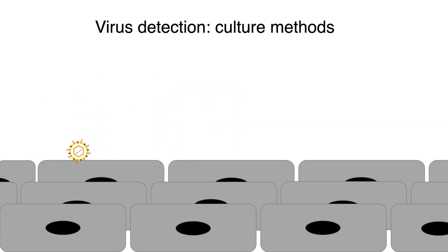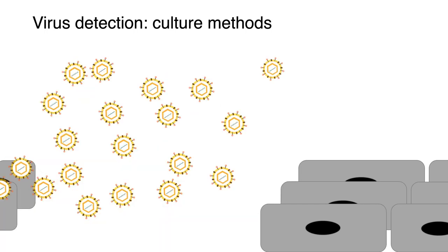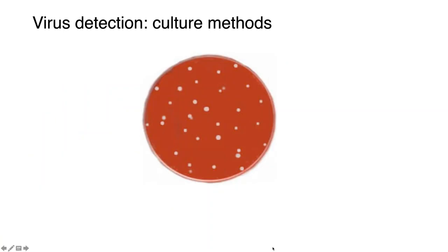We add a sample to a host cell system, and if an infective virus is present, it will infect those cells and lyse more cells. Over time, holes form in a 2D cell system — called plaques. This is a cell line dyed pink, and where each hole in the lawn of cells is a plaque formed from a single virus or clump of viruses. We can enumerate how many infective viruses were in our sample based on the number of plaques. But we have to have the right cells to detect the virus.